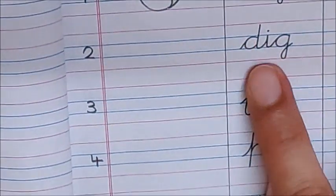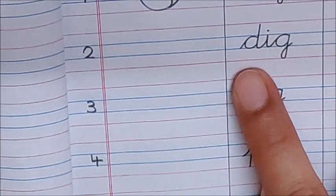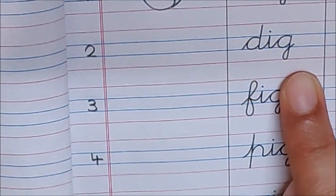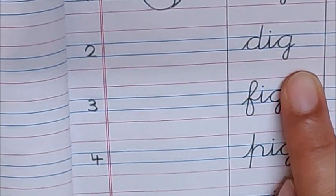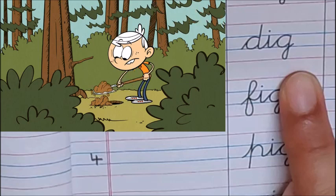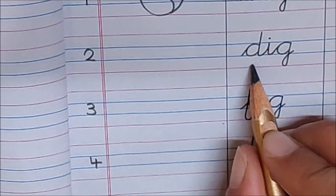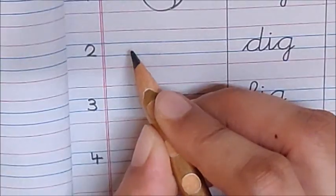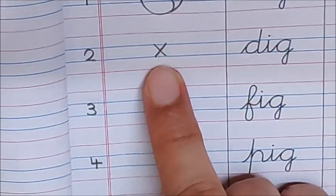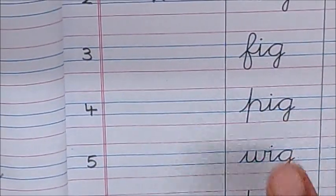Now let us go to the next word. Da, i, ga, dig. Dig means khodana. You dig to make a pit. Look at this boy. This boy is digging to make a pit. Gaddha banane ke liye wo jo kar raha hai, usse hum bolte hai dig. So children dig means khodana. I am not drawing any picture for dig. I have put a cross here.